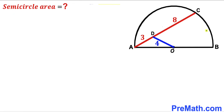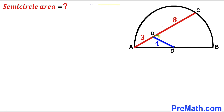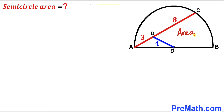Welcome to pre-math. In this video we have a semicircle with center O, along with chord AC and segment OD. As you can see in the given diagram, segment AD is 3 units, segment CD is 8 units, and segment OD is 4 units. Furthermore, AB is the diameter of this semicircle. Our task is to calculate the area of this semicircle.